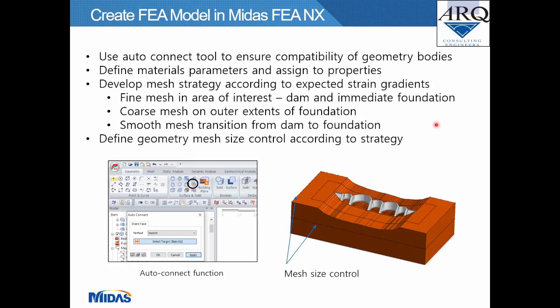Creating the finite element model in MIDAS: the first step is using the AutoConnect tool to ensure compatibility of the various geometry bodies by aligning vertices, lines, and faces of touching geometry. Material parameters were then defined and assigned to the properties. A suitable meshing strategy was developed according to expected strain gradients, comprising a fine mesh in the area of interest — particularly the dam and immediate foundation — a coarse mesh on the outer foundation extents, and a smooth mesh transition from dam to outer extents.